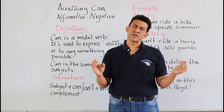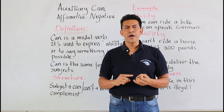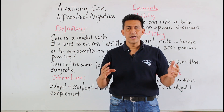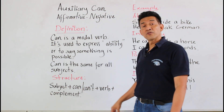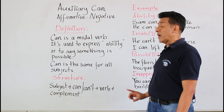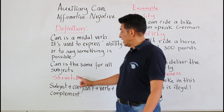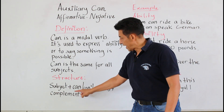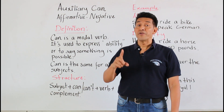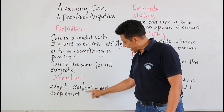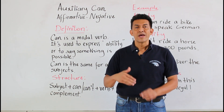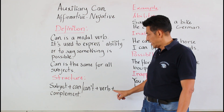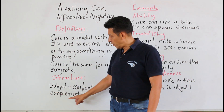¿Y cuáles son los sujetos que nosotros usamos? I, you, he, she, it, we, and they. Esta es la estructura. The structure says subject. Can is in affirmative way. Can is for negative sentences. Verb plus compliments.